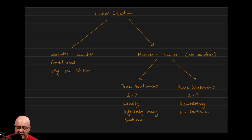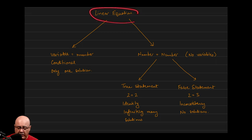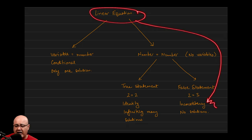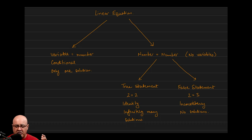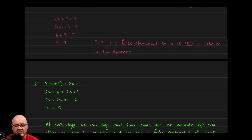On the other hand, if number equals number is a false statement — like 2 equals 3, or 1 equals 5, or 0 equals 10 — then the original equation is classified as an inconsistency. Inconsistencies have no solutions. Nothing you plug in will work. It doesn't matter whether you use a small number, a big number, a fraction, a decimal, or zero. Inconsistencies will never make sense — $2 will never be $3.